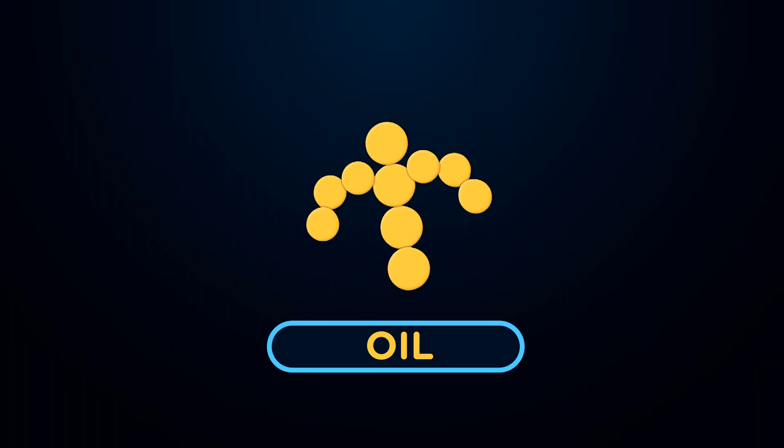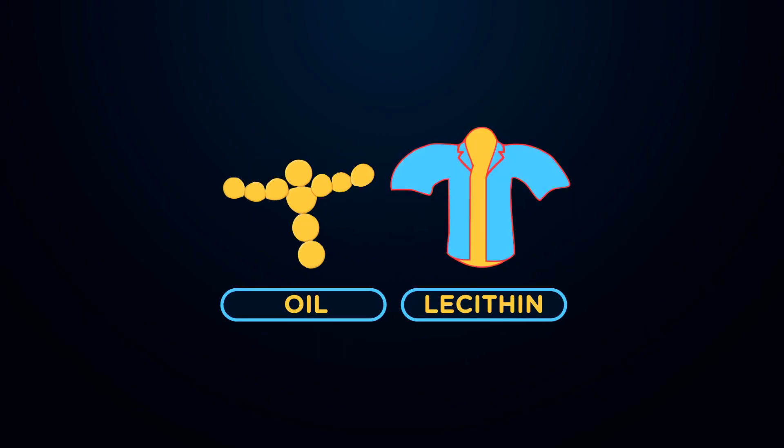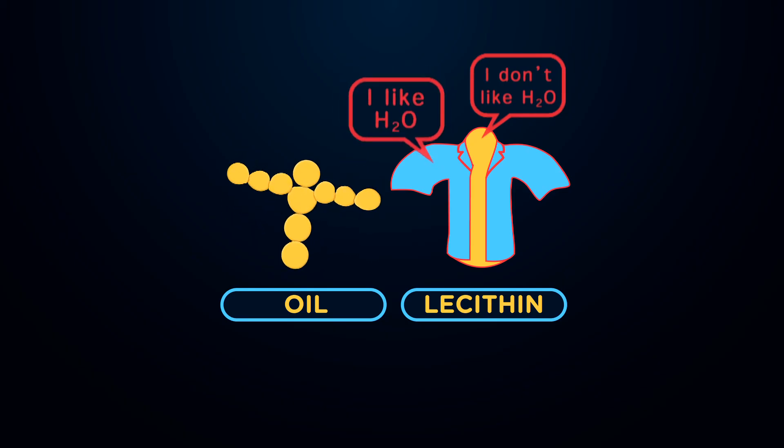Think of the lecithin mixture coating individual oil droplets in full-length coats. Here's the thing about lecithin. Part of it, like oil, is hydrophobic, avoids water. But another part of it is hydrophilic, loves the water. That's what makes the lecithin coat perfect.